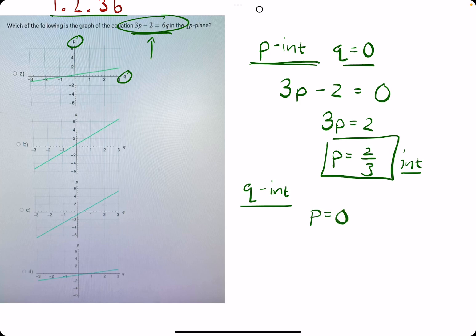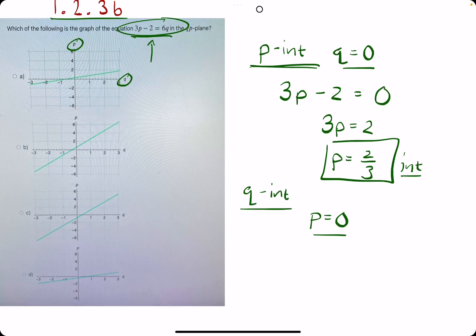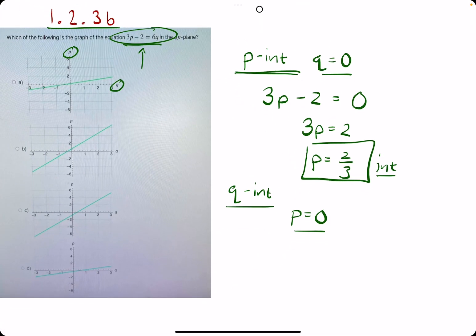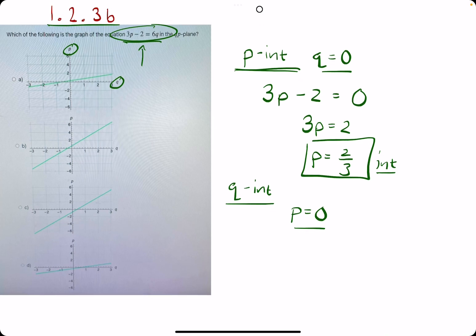If we wanted to, we can find the q-intercept. In some cases, you might be done once you find the p-intercept because there might only be one graph that has that correct p-intercept. But in this case,